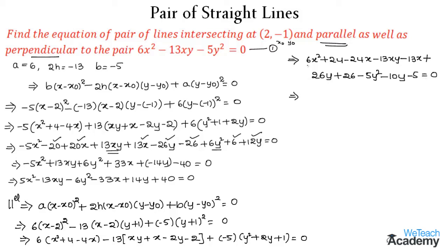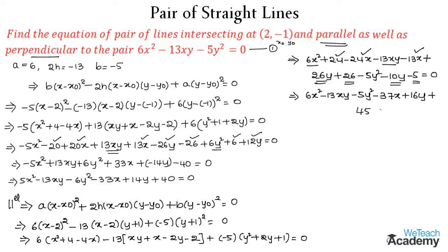Grouping terms: x² term gives 6x², xy term gives -13xy, y² term gives -5y². For x terms: -24x - 13x = -37x. For y terms: 26y - 10y = +16y. For constants: 24 + 26 - 5 = +45. So the equation is 6x² - 13xy - 5y² - 37x + 16y + 45 = 0.